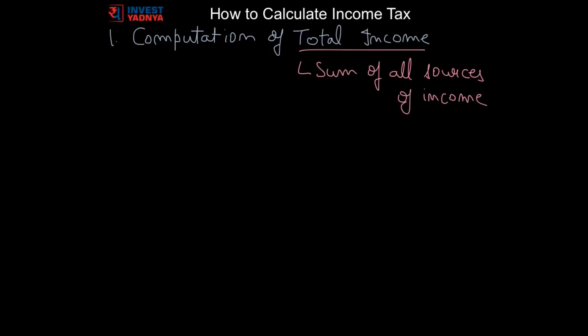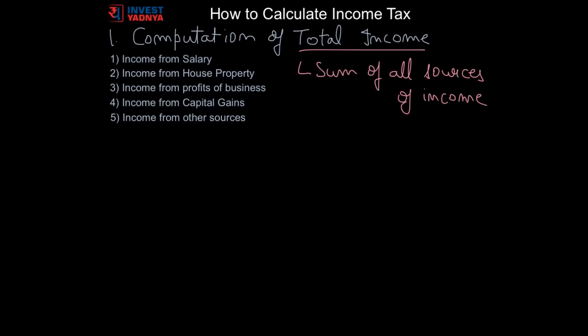It has to fall into one of the five following heads: income from salary, income from house property, income from profits and gains of business or profession, income from capital gains, or income from any other sources. And we will discuss each of them now.